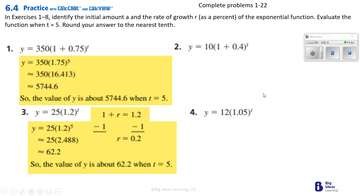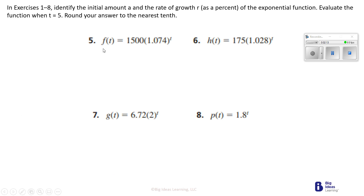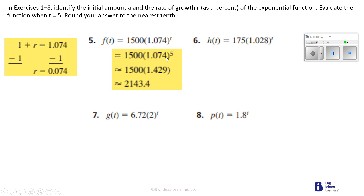You have number 4 to do. Number 5 says identify the initial amount — once again, we're making T equal to 5. I see that we've got 1.074. When we subtract 1 from it, the rate of growth is 0.074. Then we're taking 1.074 multiplied to itself 5 times, which gives us 1.429. We multiply that to 1,500, giving us 2,143.4. Number 6 is for you to do.